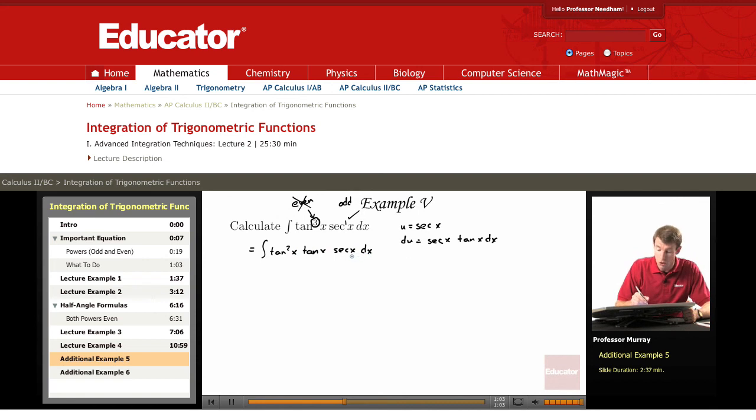Now, the u is going to be secant x, but we need to have du, secant x tangent x. So we've got that right here, secant x tangent x.